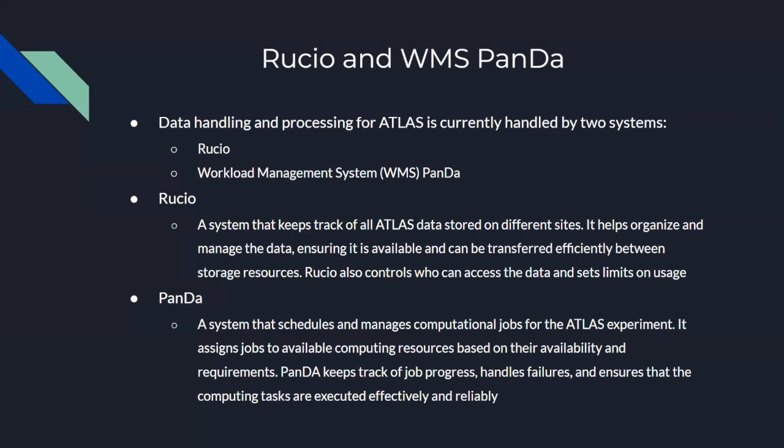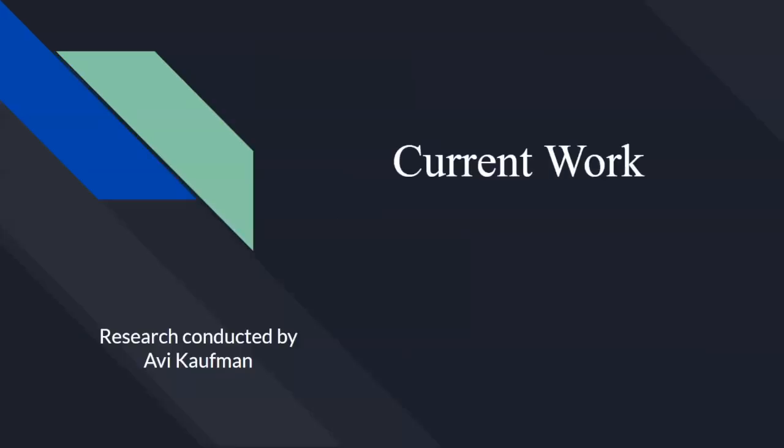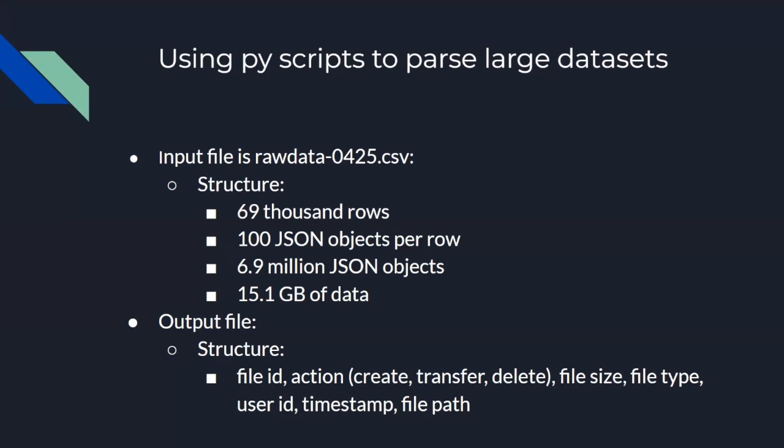So Rucio and WMS Panda, these are the two, like this is the system for data handling and processing that Atlas currently uses. You can see that Rucio basically tracks a bunch of data stored and helps you manage the data and transferring data efficiently is all that stuff goes through Rucio. Whereas Panda is more about like scheduling jobs and assigning computing resources to do tasks most efficiently. As of recently, I have not been able to get an account to access a lot of the data. I'm getting that very soon, but I haven't been able to do a lot of work on this specific project. However, I have been able to do work on parsing for large data sets. And so that's what I've been doing for the past couple of weeks. Here's just an example of something I've done.